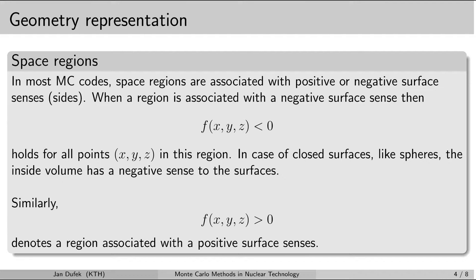We have already learned about space regions when learning about the input file for the Serpent code. Space regions are created by dividing the whole space into two parts using different surfaces. In most Monte Carlo codes all available surfaces divide the whole space into two parts. In order to separate different space regions from each other we assign a negative sign to one of the regions, depending on which side it lies with respect to the surface.